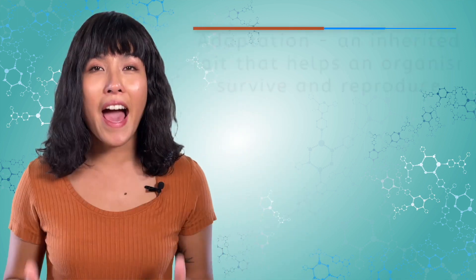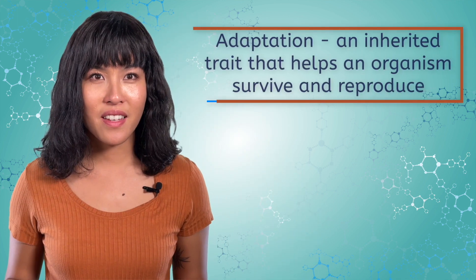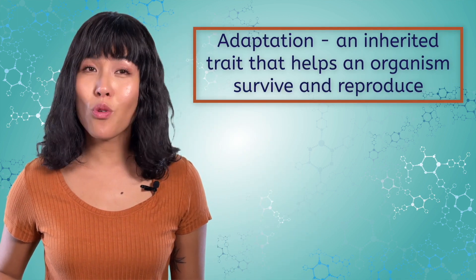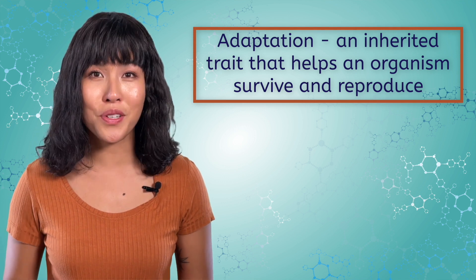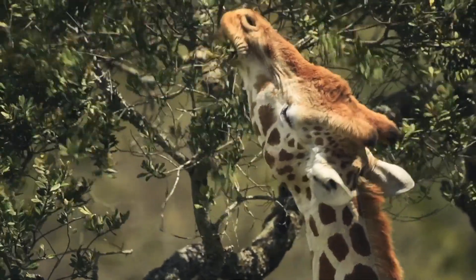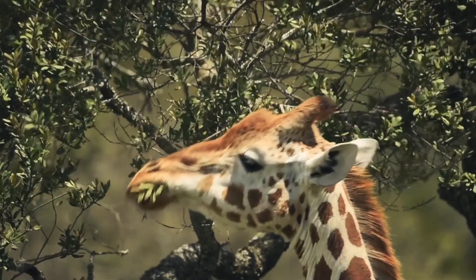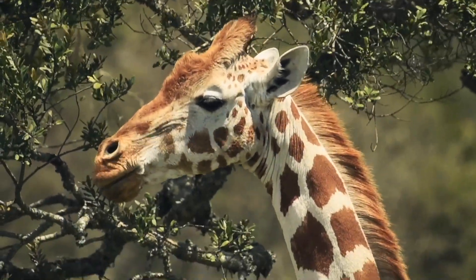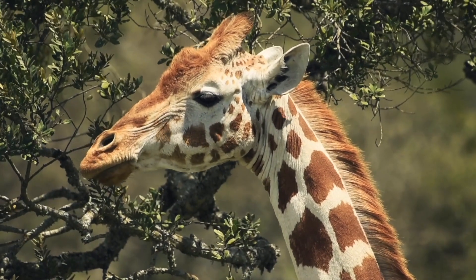When an organism does inherit a useful trait that helps them solve one of these challenges, it is called an adaptation. An adaptation can be any trait that helps an organism survive and reproduce. An obvious example of an adaptation is a giraffe's long neck. Giraffes like to eat leaves that are way up in high trees.